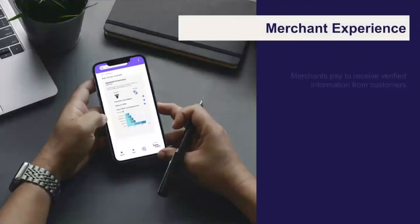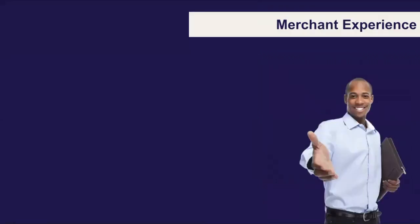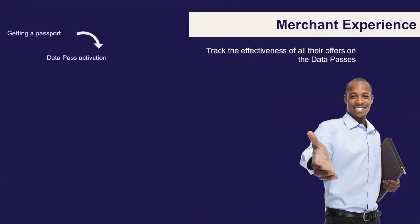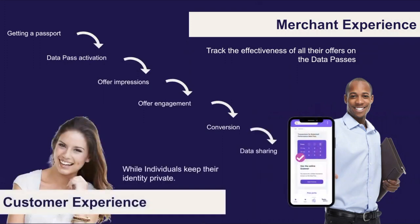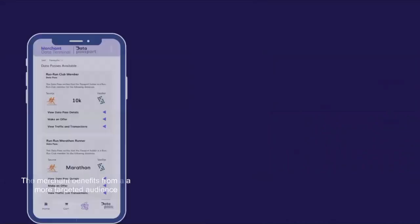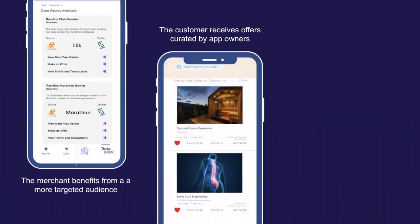Merchants pay to receive verified information and also to list their offers, which they set up right at their merchant data terminal. They can track interest in their offers all the way from passport to conversion to data sharing — all without leaking individuals' identities. Merchants benefit from targeted audiences, and individuals receive curated offers.